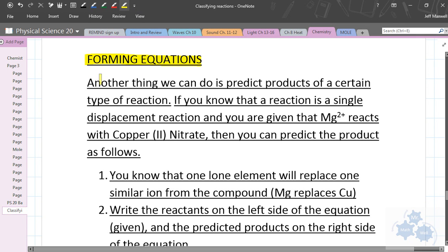So forming equations. Another thing we can do is predict products of a certain type of reaction. If you know that a reaction is a single displacement reaction and you're given the reactants, let's say Mg2+ reacts with copper (II) nitrate, that's all that you need to know in order to predict these equations. It's pretty easy to predict what the products will be, and therefore you can predict the entire chemical reaction, and then you can balance it.